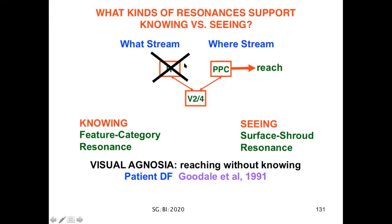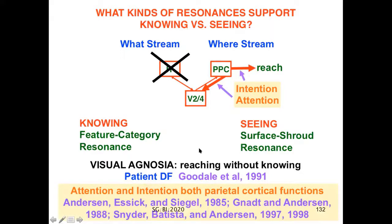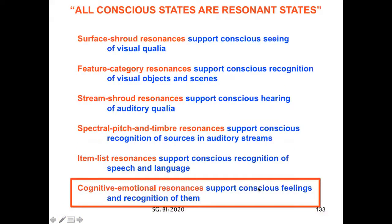Moreover, if you cut the what stream knowing resonance, then you get visual agnosia. You can still reach—you see in order to reach without knowing. Moreover, due to the top-down feedback, this shows how top-down spatial attention and bottom-up intention to reach are both parietal cortical functions. Briefly, let me discuss cognitive-emotional resonances that support conscious feelings and recognition of them.